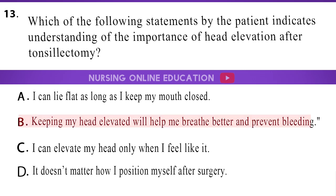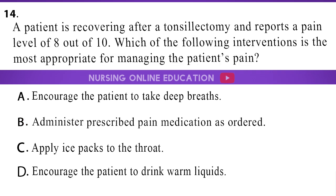The answer is option B: Keeping my head elevated will help me breathe better and prevent bleeding. A patient is recovering after a tonsillectomy and reports a pain level of 8 out of 10. Which of the following interventions is the most appropriate for managing the patient's pain? A. Encourage the patient to take deep breaths. B. Administer prescribed pain medication as ordered. C. Apply ice packs to the throat. D. Encourage the patient to drink warm liquids.